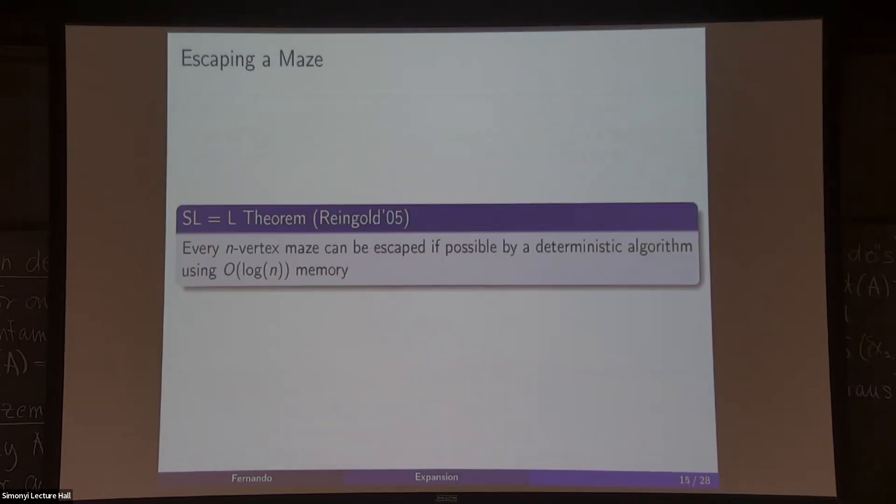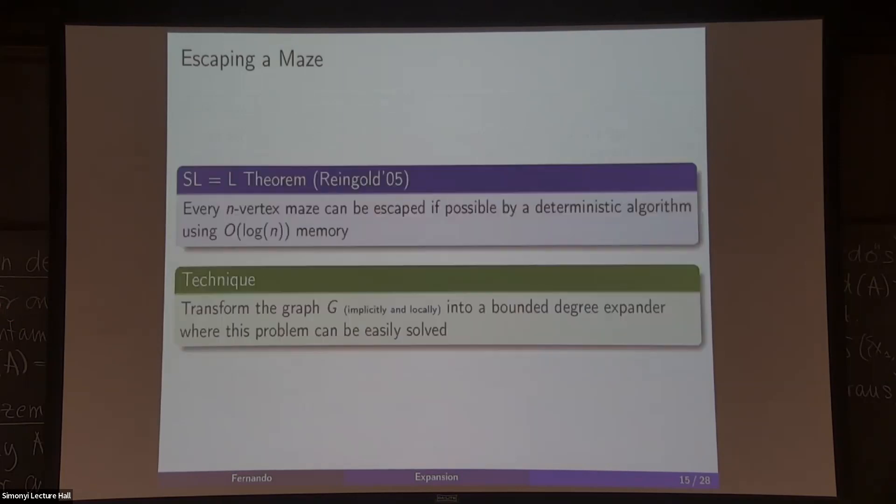If you try to think about this problem, it's highly intriguing. Very surprisingly, Reingold showed that it is possible. There is a deterministic algorithm that if it's possible to reach t from s, it's going to do that using just log n bits of memory. It's a very very efficient memory-efficient algorithm. This is one important result for us. The idea is to transform the input graph that's arbitrary into an expander, a bounded degree expander graph. You can do it as an exercise that if you have a bounded degree expander graph this problem is not too hard, but you need to transform it very locally and very carefully because you only have log n bits. You cannot afford to use a lot of space to transform this graph.